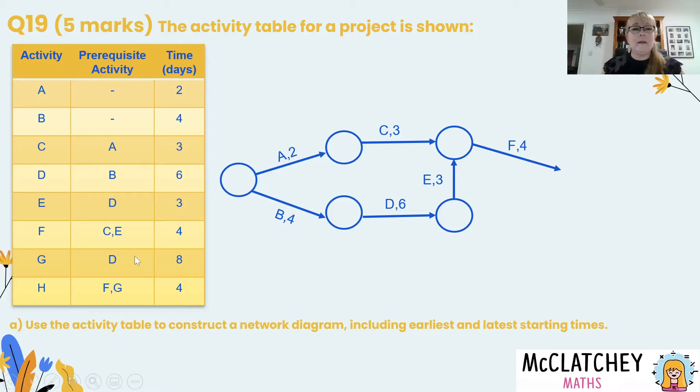Now if I look further down in my table I can see that activity G needs to come out of activity D. Here's activity D. So it's going to branch out from here and then both of those activities are going to join together here with a final vertex where activity H has F and G as its prerequisite and then we finish our diagram entirely with another vertex at the end to indicate that the project is complete.